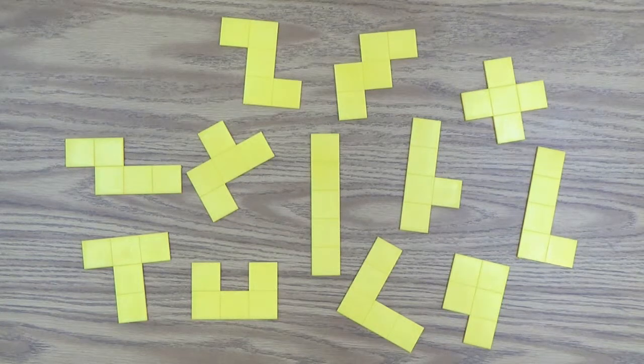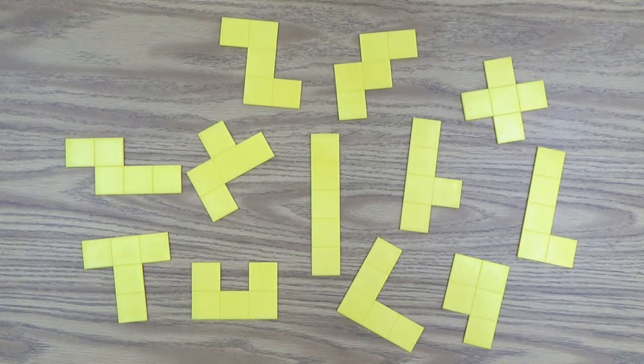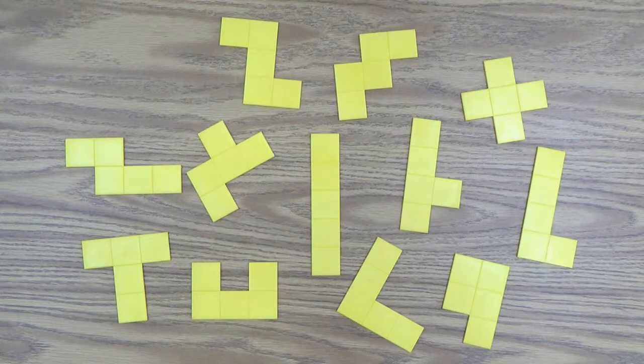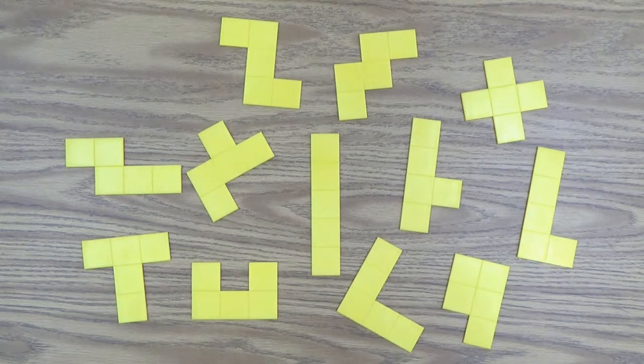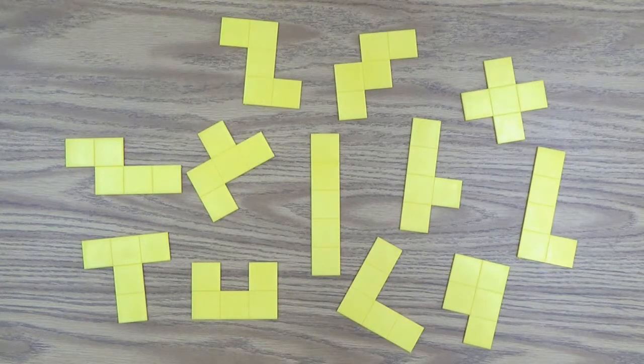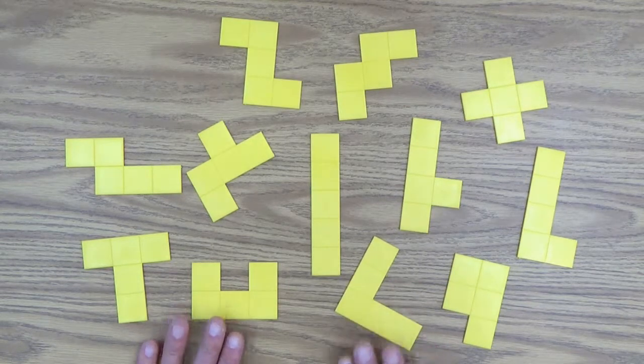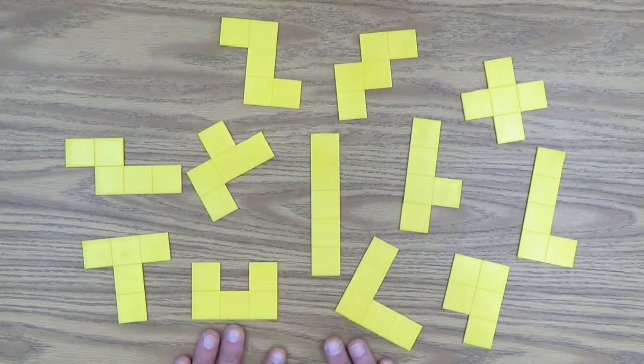Well, the pent tells you that there's five of something. So they are five what we call congruent squares, meaning they're exactly the same, they're equal, and they're connected along the edges.